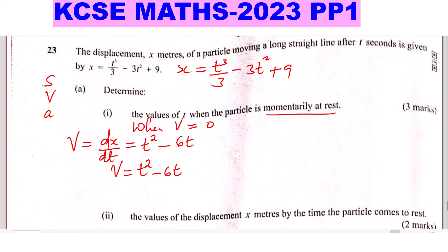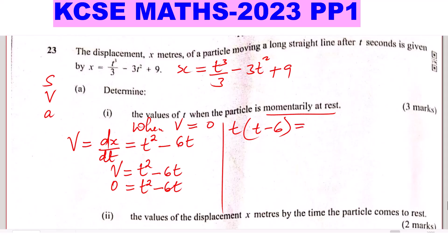When the particle is momentarily at rest, velocity equals 0. So substitute velocity with 0: 0 equals t squared minus 6t. Now you're supposed to find the values of t. So t squared minus 6t — you can factor out t, since t is common — giving t(t minus 6) equals 0.